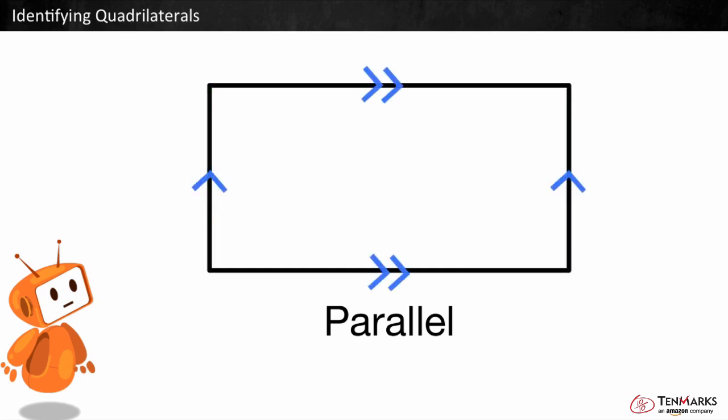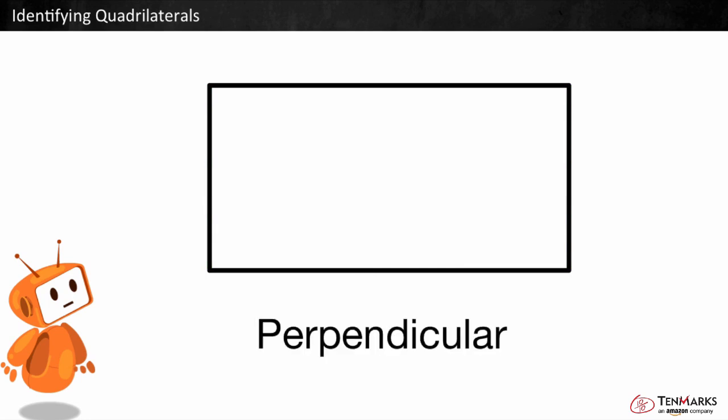We use arrowheads like these to show sets of sides that are parallel. Perpendicular sides are sides that make a 90 degree angle or a right angle like this.